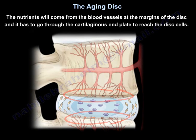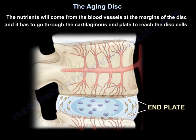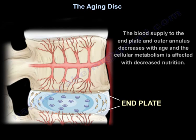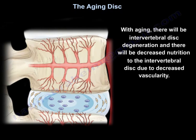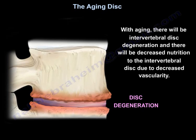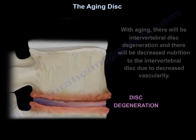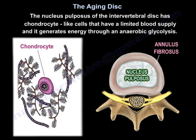Nutrients come from blood vessels at the margins of the disc and must pass through the cartilaginous end plate to reach the disc cells. The blood supply to the end plate and the outer annulus decreases with age, and cellular metabolism is affected by decreased nutrition. With aging, intervertebral disc degeneration occurs due to decreased vascularity. The nucleus pulposus contains chondrocyte-like cells with a limited blood supply that generate energy through anaerobic glycolysis.